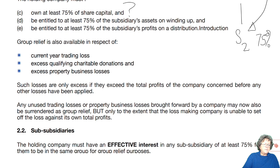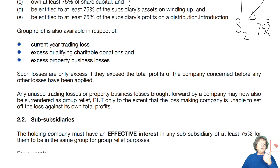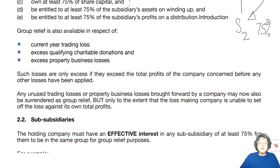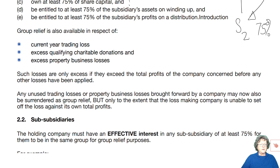Group relief is available in respect of three things: one, a current year trade loss surrendered to another company within the group; any excessive QCDs that are not being used; and excessive property business losses. Such losses are only excess if they exceed the total profits of the company concerned before any losses are applied. Any unused trading losses or property losses brought forward may also now be surrendered via group relief, but only to the extent that the loss-making company is unable to set off the loss against its own total profits.